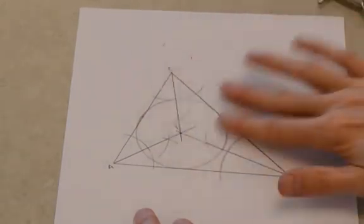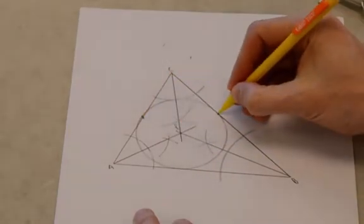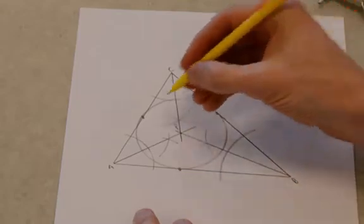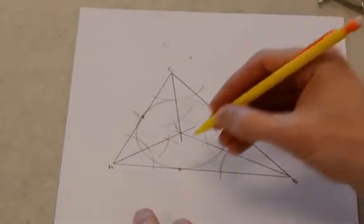OK, so that's about as good as you can get drawing by hand. And there are three points of intersection. Let's label these D, E, F.